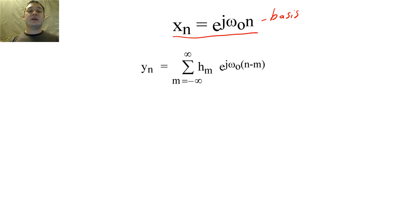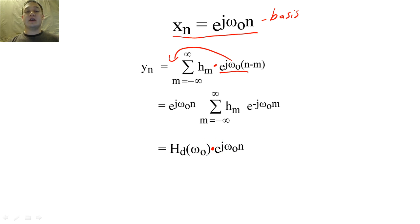So if we input a periodic basis function into a filter, the convolution of the two signals will look like this. We can pull e^(jω₀n) out of the summation to find that y[n] will simply equal x[n] scaled by the DTFT evaluated at ω₀.